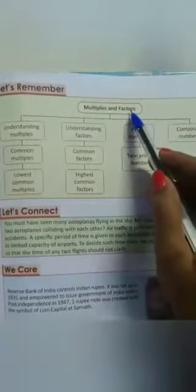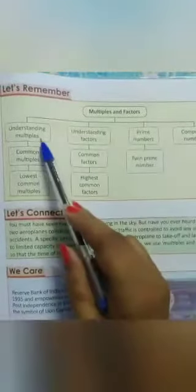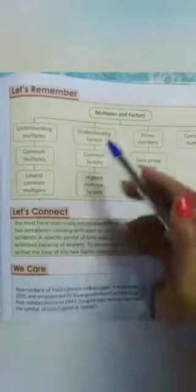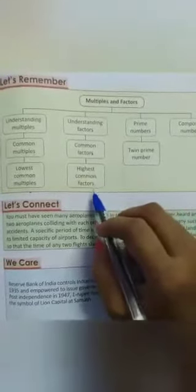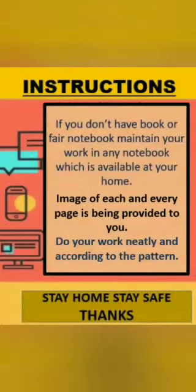Continue 1, 2, 3, 4, 5, so 2 and 3 consecutive prime numbers. Now your home assignment is to do rest of the questions of this exercise, let's try 6, yourself. Then come to let's remember section. Now let us recall what we have done in this chapter multiples and factors. Firstly, we came to know about understanding multiples, then common multiples and lowest common multiples that is LCM. Then we came to know about understanding factors, then common factors and highest common factors that is HCF. Then prime numbers and twin prime numbers and composite numbers. So this is all about today. Follow the following instructions: if you don't have book or fair notebook, maintain your work in any notebook which is available at your home. Image of each and every page is being provided to you. Do your work neatly and according to the pattern. Thank you.